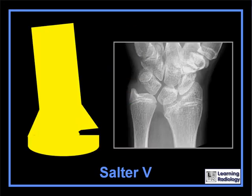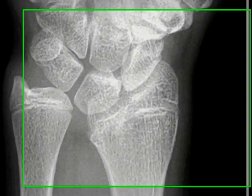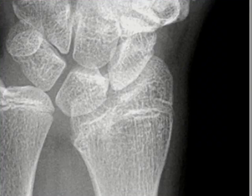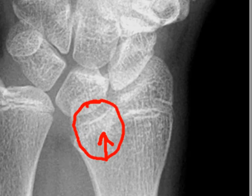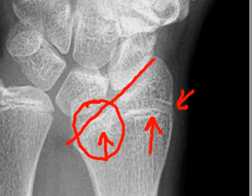Here is an example in the distal radius. On the medial side of the junction between the epiphysis and the metaphysis, there is fusion. On the lateral aspect of the epiphyseal plate, the plate remains open, and that has resulted in an angular deformity because growth stopped medially while it continued laterally.